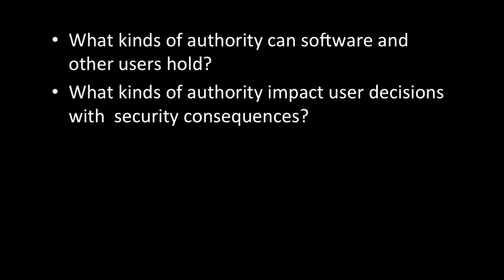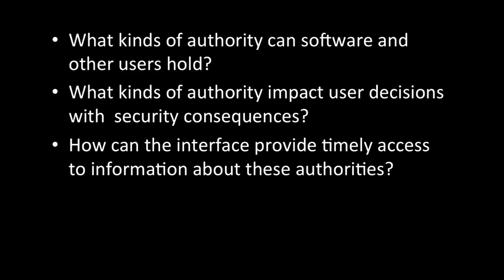In this video we're going to look at additional authorization and communication guidelines to help us design usable secure software. The first guideline is that users should know what authority others have — that means other people and software, and the authority those people and software have to allow access to the user's own information or resources. The points to think about here are: what kinds of authority can software and other users hold? What kinds of authority impact user decisions with security consequences? And how can the interface provide timely access to information about these authorities — meaning when a user is making a decision, how can we show them what they need to know about who has authority?